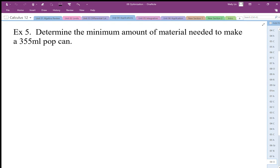This optimization problem is about finding the minimum amount of material needed to make a 355 milliliter pop can. We want to find the minimum amount of material, so we're talking about surface area. I need to come up with an equation for surface area.